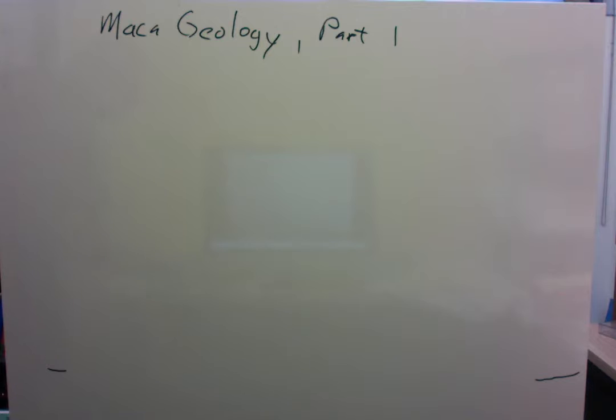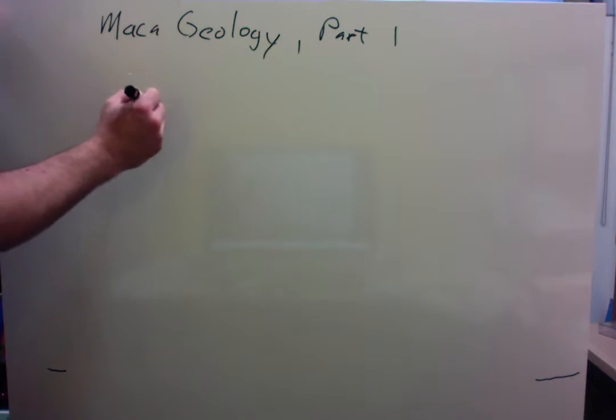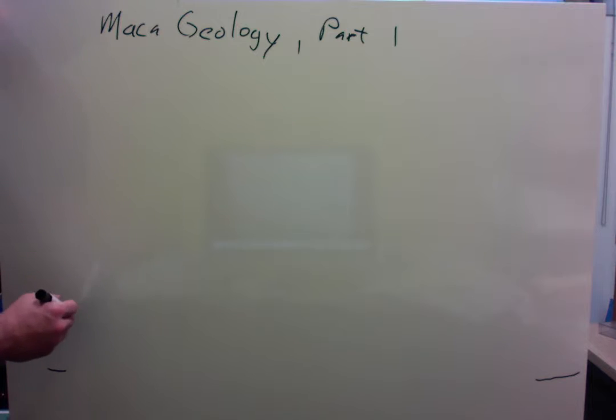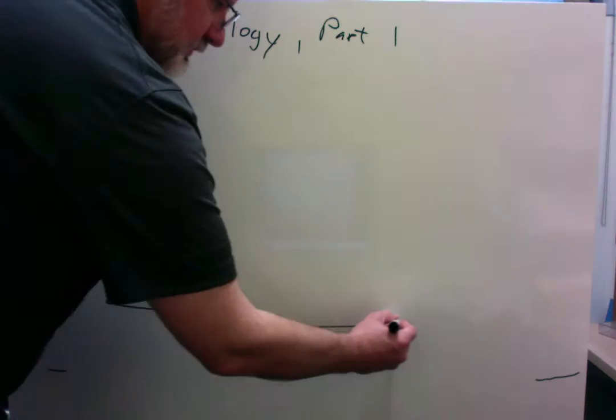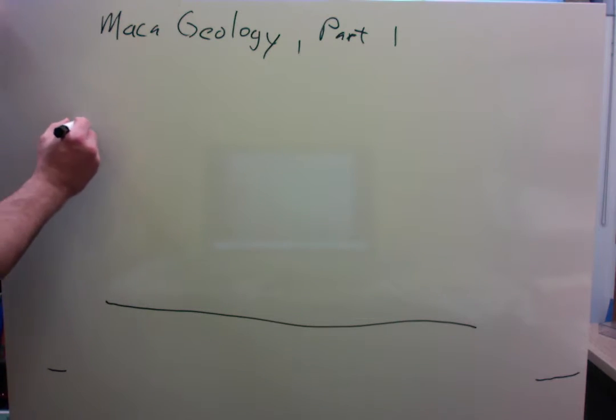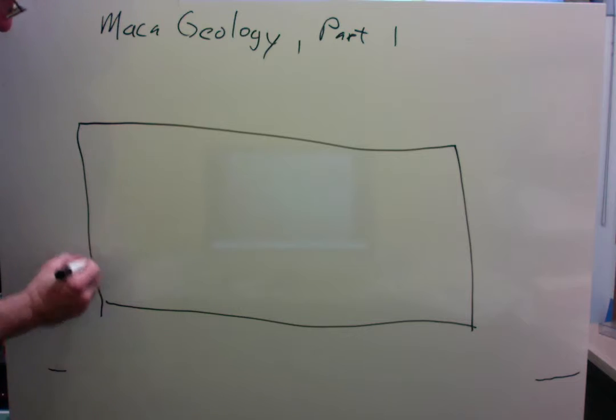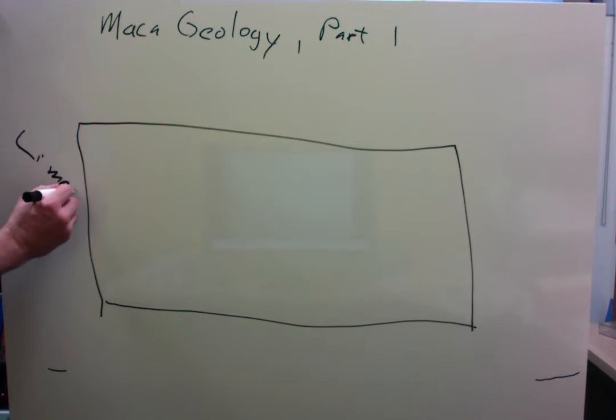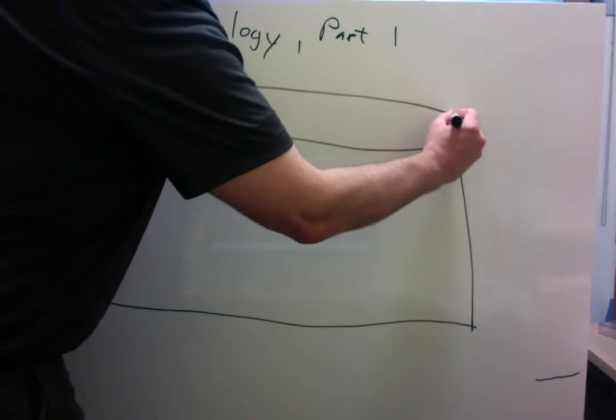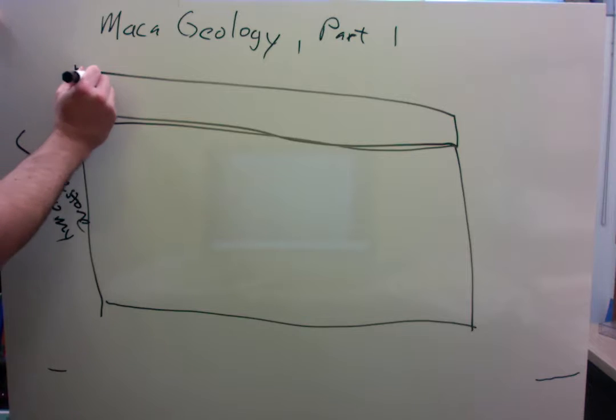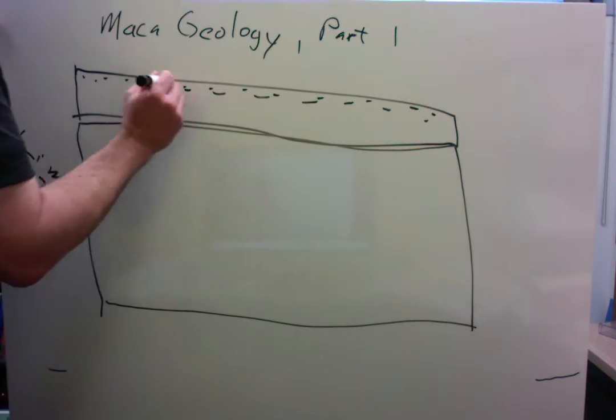The first basic that we talked about was how the bedrock and the cave work together to form the Mammoth Cave system. We talked about how the oldest rock is at the bottom. There's this thick 300-foot block of limestone that's about 330 million years old. And then on top of that is this block of sandstone and shales.